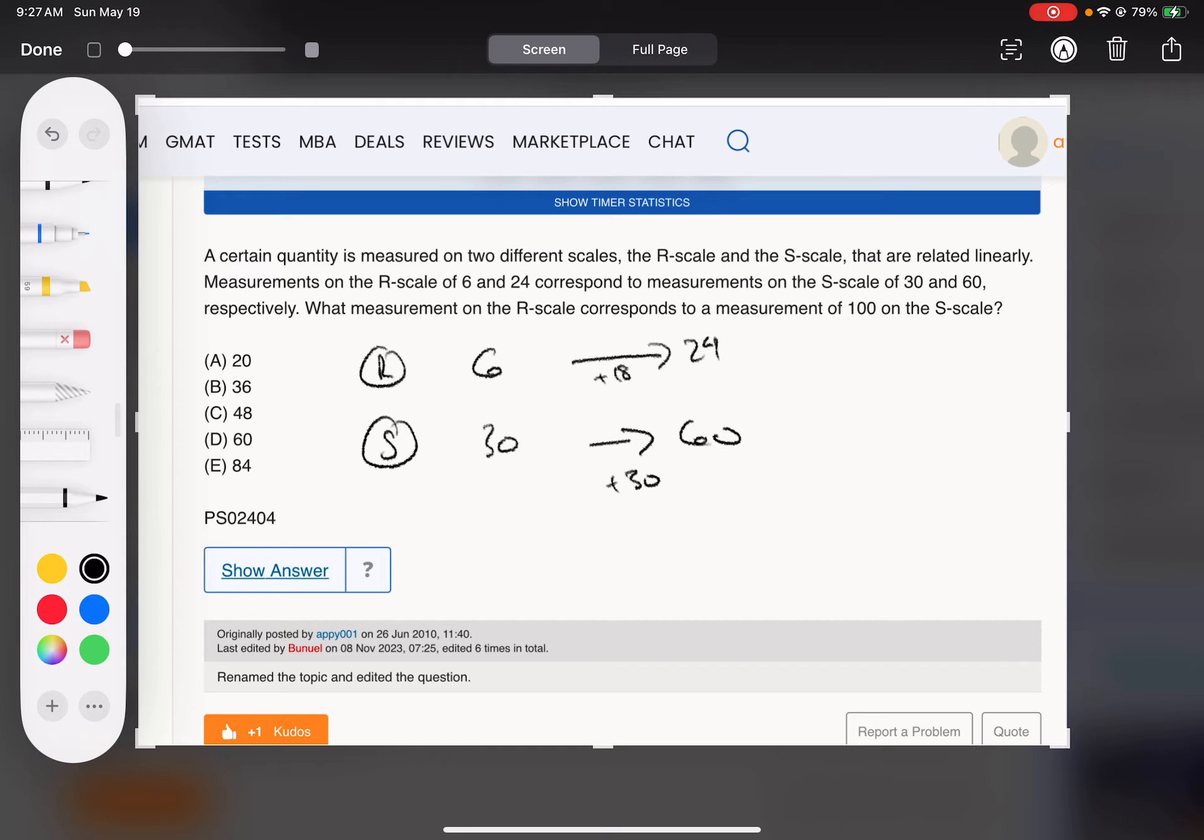So then talking about an S scale of 100, the jump of 18 corresponds to a jump of 30. So a jump of 18 to a jump of 30, we could say proportionally is a jump of what to a jump of 40.